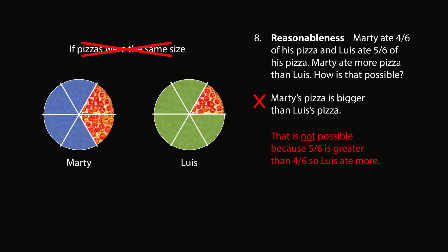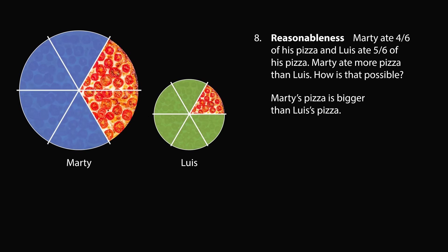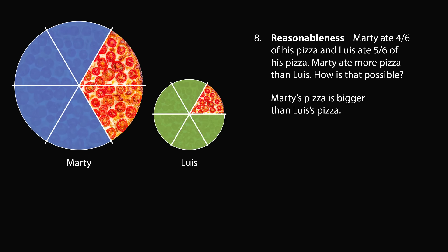But there's nothing in the question saying the pizzas have to be the same size. Certainly we can imagine increasing the size of Marty's pizza, and eventually at some point, 4 slices of a very large pizza will be more than 5 slices of a smaller pizza. So it is completely reasonable that Marty's pizza is bigger than Luis's pizza, and therefore Marty ate more pizza than Luis.